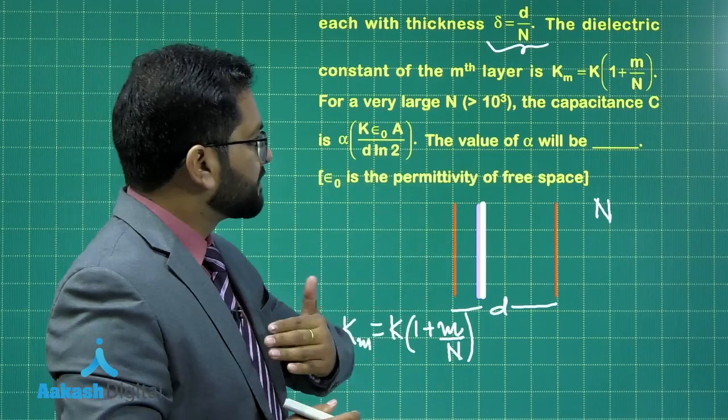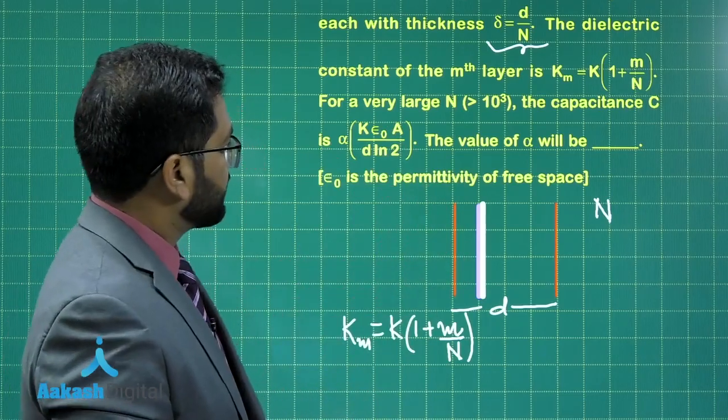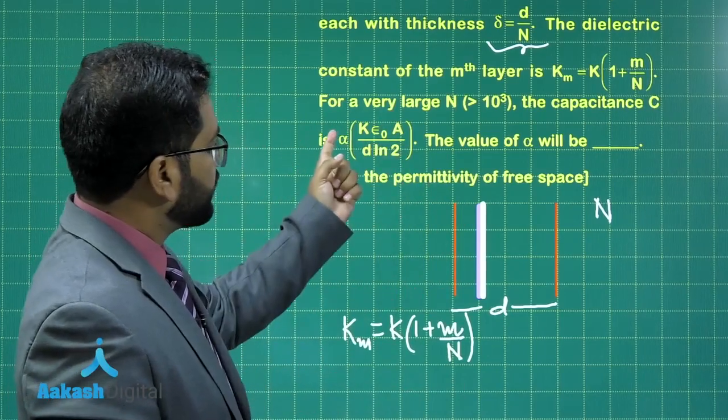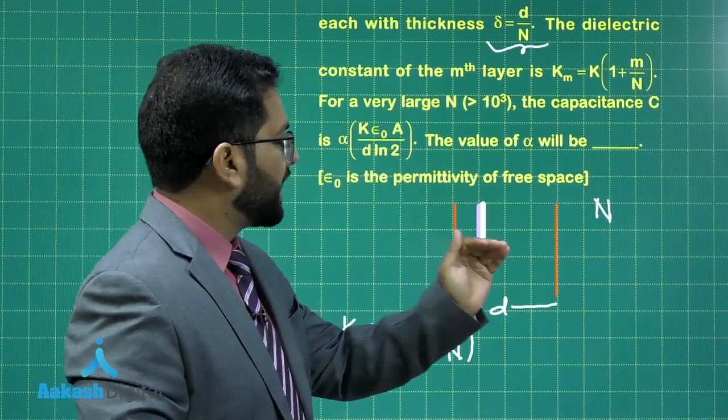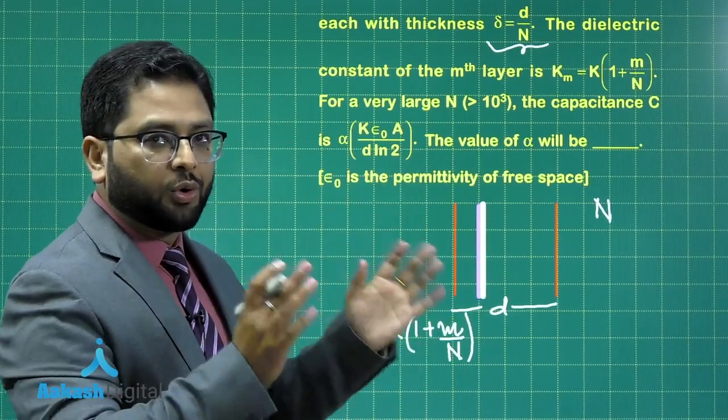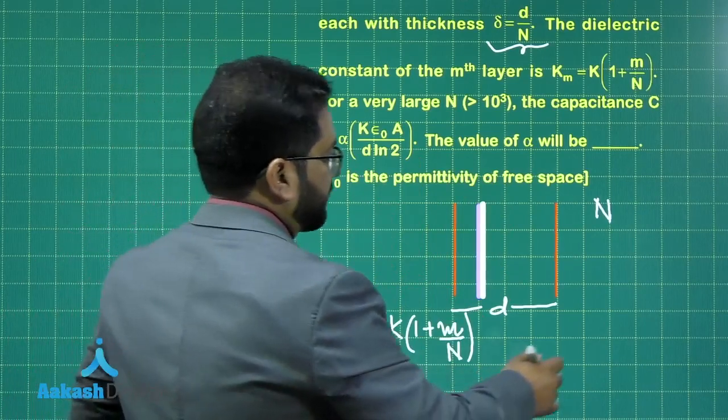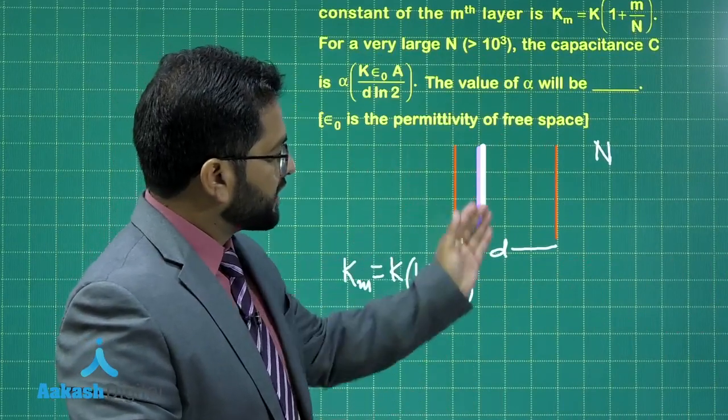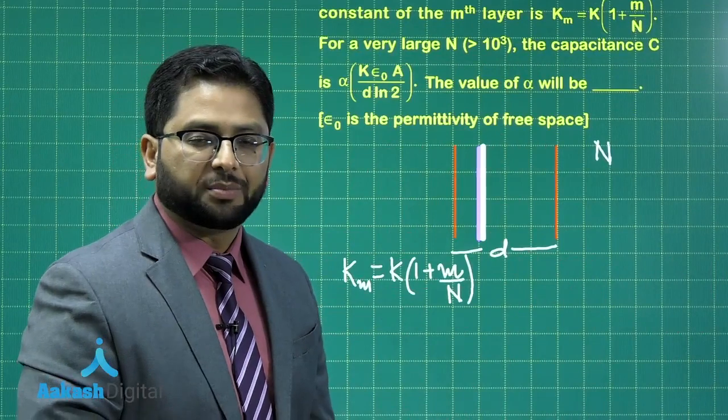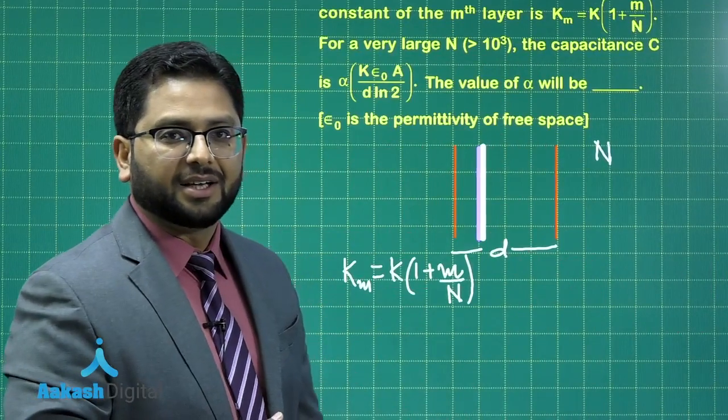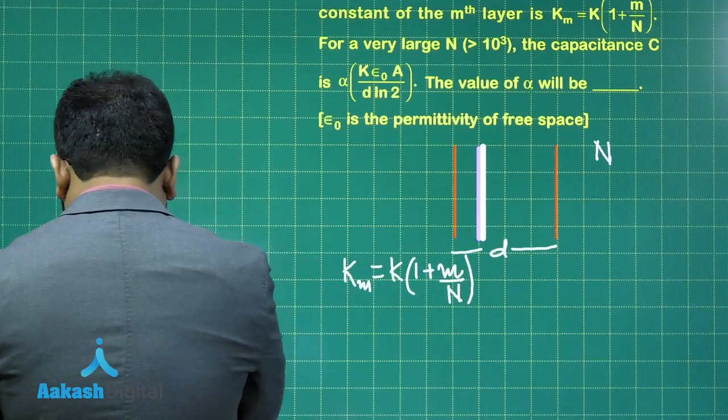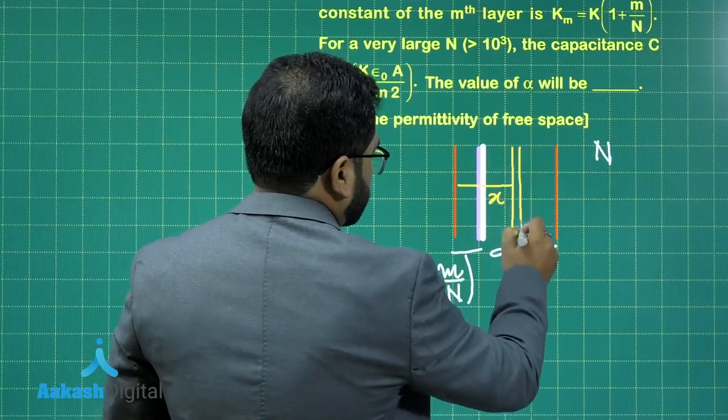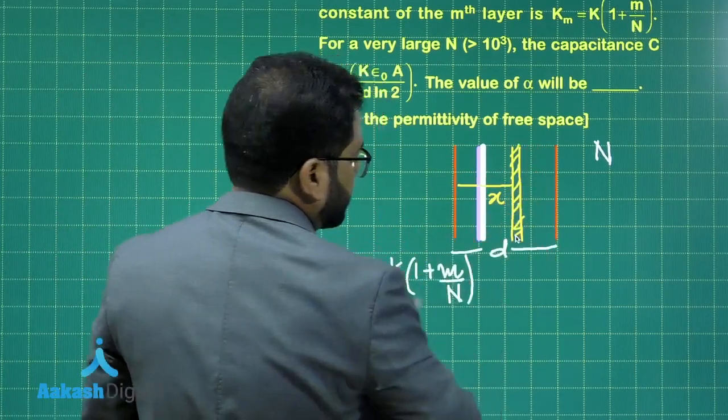Now, capital N is much, much large, even greater than 1,000. That has been given. And we need to compute the capacitance. And that has to be equated with this value. And eventually, the desired value is for alpha. So the whole attention would be now to compute the value of capacitance. So it's very clear that as you go, all these differential capacitors can be treated to be capacitors in series. So what I'll do is that, first of all, I would go at any distance x. I'll consider a differential thickness that would be of dx. So let's see. How much is the capacitance?